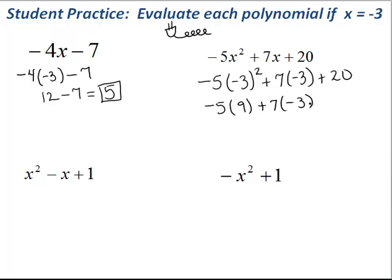Now we concentrate on multiplication and the order it appears from left to right. Negative 5 times 9 is negative 45, plus 7 times negative 3 is negative 21, plus 20, bringing the 20 down.